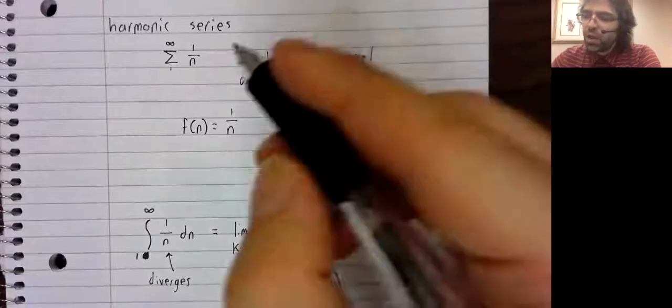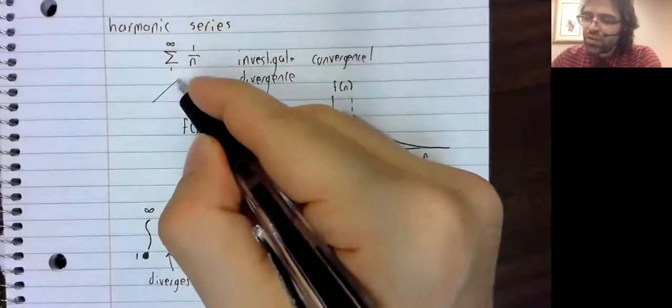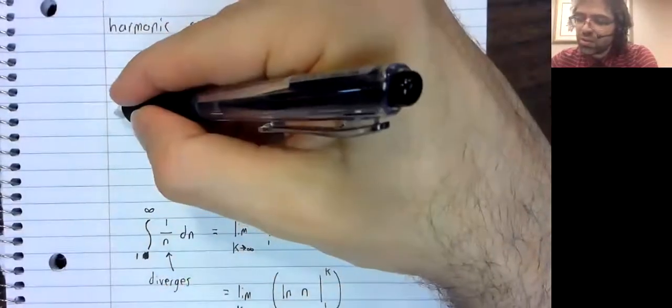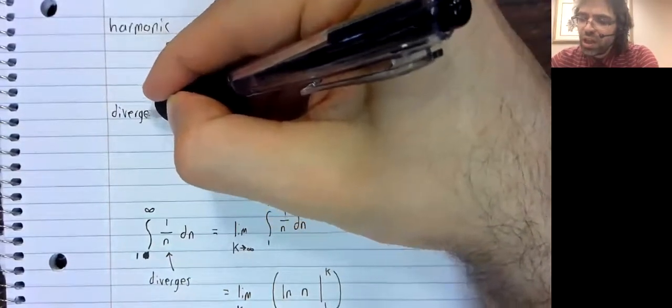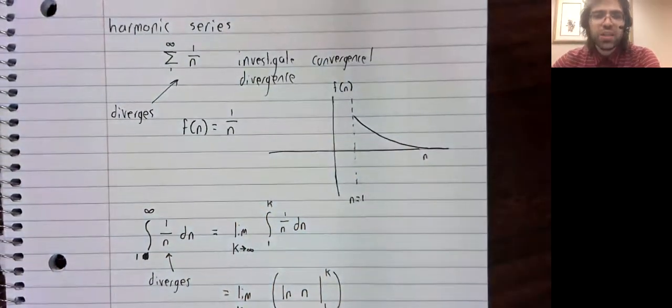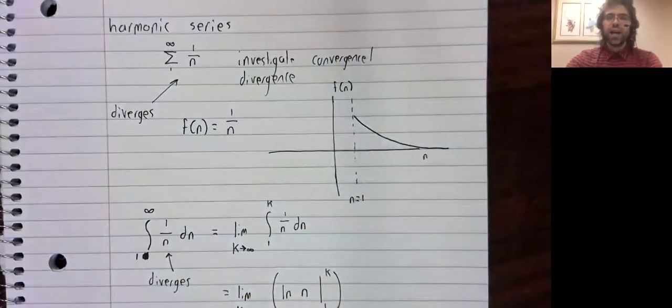And what the integral test then tells us is that the harmonic series diverges. In the next video, we'll look at another standard example called a p-series.